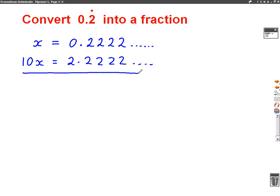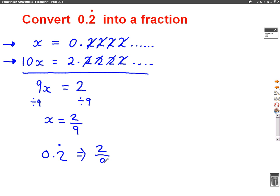Now the reason we've done that is because if we take these two away, if we do the 10x take away the x, we'll be left with 9x. And if we do 0.22222 take away 0.22222, the decimal bit will all cancel out. As you can see, I can cross it off there because it all cancels out, and it will leave me with 2. So 9x equals 2. We can just divide both sides by 9, and we'll get x equals 2 over 9, which is a fraction. So 0.2 recurring is 2 ninths.